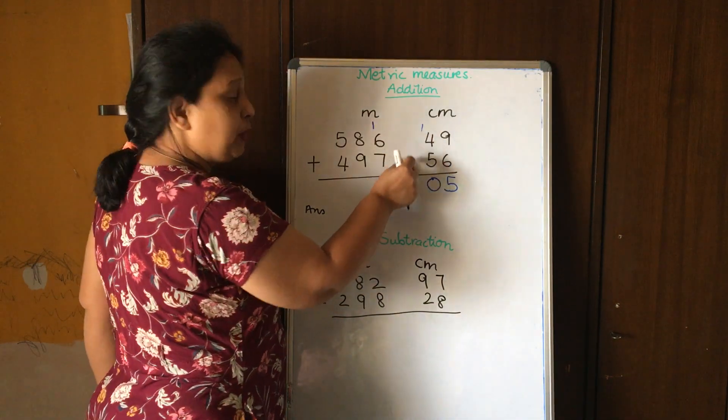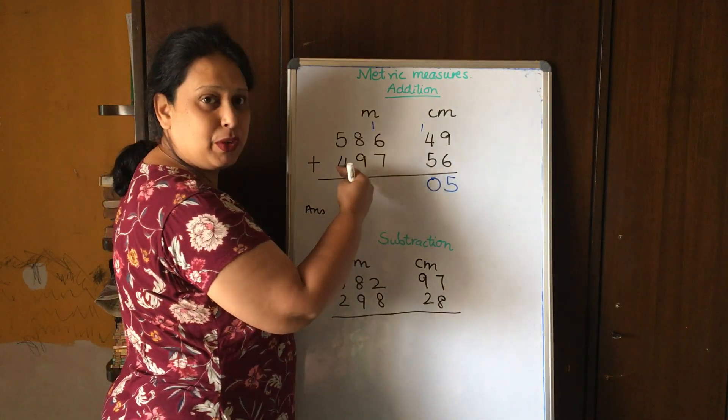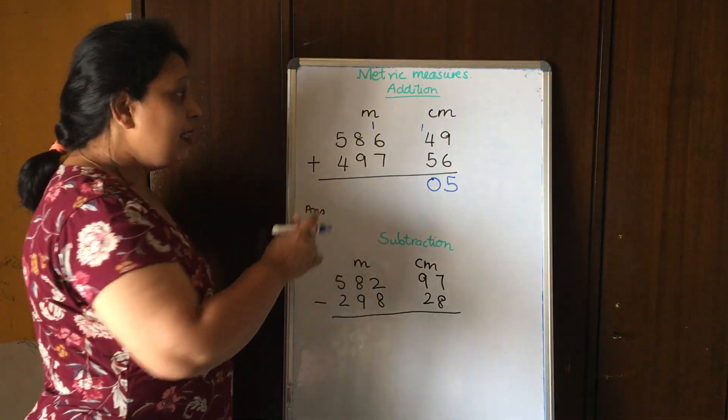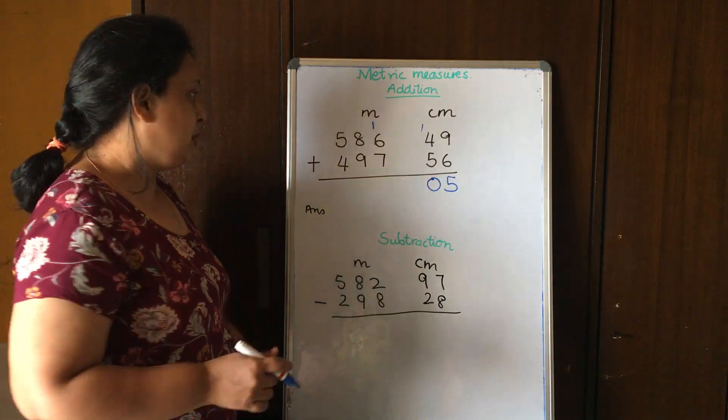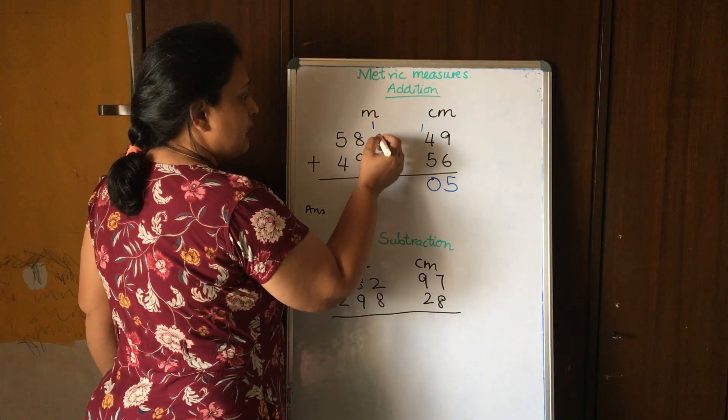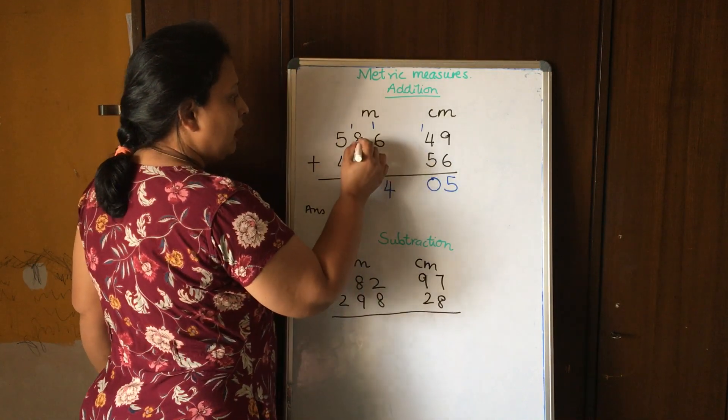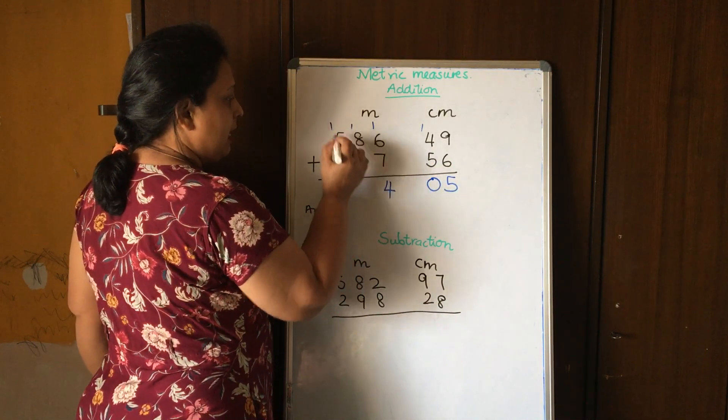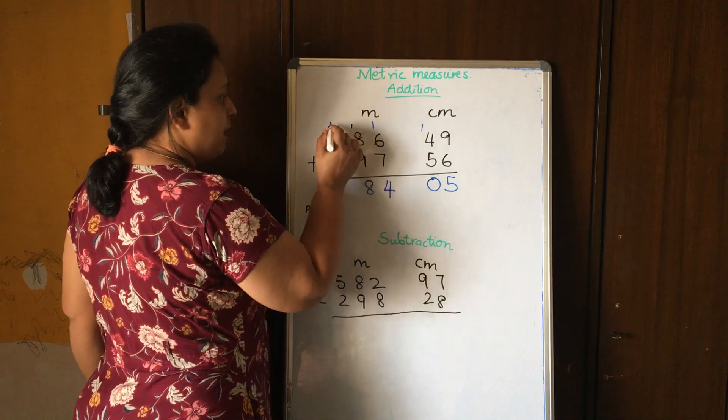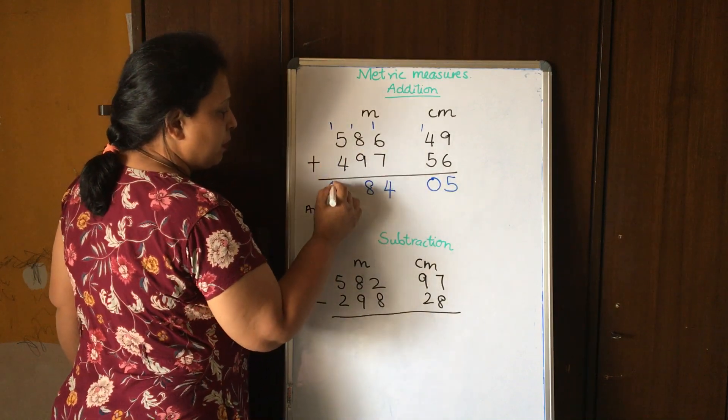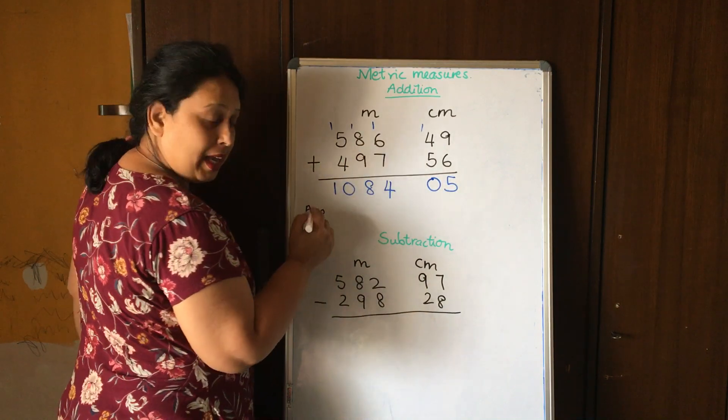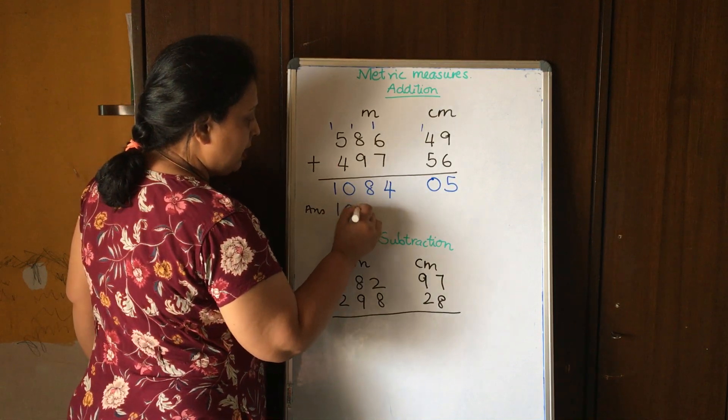But here there is no point, we just leave a space in between. Six plus one, seven, and seven, fourteen. Eight and one, nine. Nine and nine, eighteen. Five and one, six, plus four, ten. So my answer will be 1084 meters and 05 centimeters.